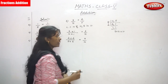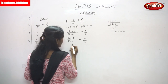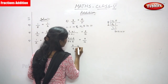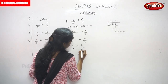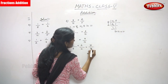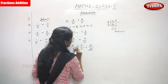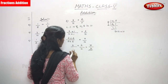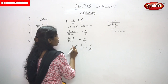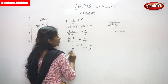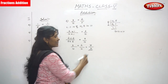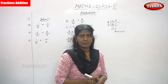Now the denominators are the same. If the denominators are the same, you have to add the numerators. 3 by 10 and 4 by 10 — the answer is 7 by 10.